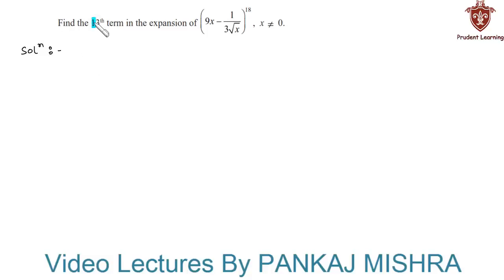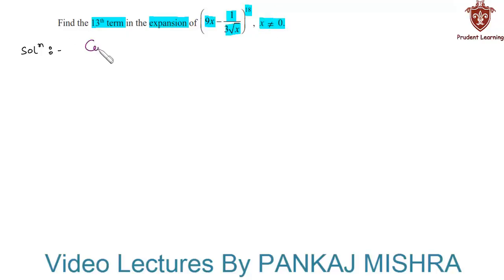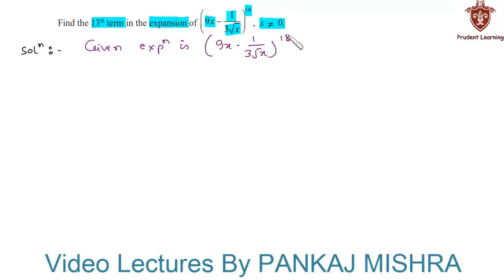Find the 13th term in the expansion of (9x minus 1 upon 3 root x) whole raise to 18, where x is not equal to 0. Let us proceed with the solution. The given expression is (9x minus 1 upon 3 root x) whole raise to 18, where x is not equal to 0.